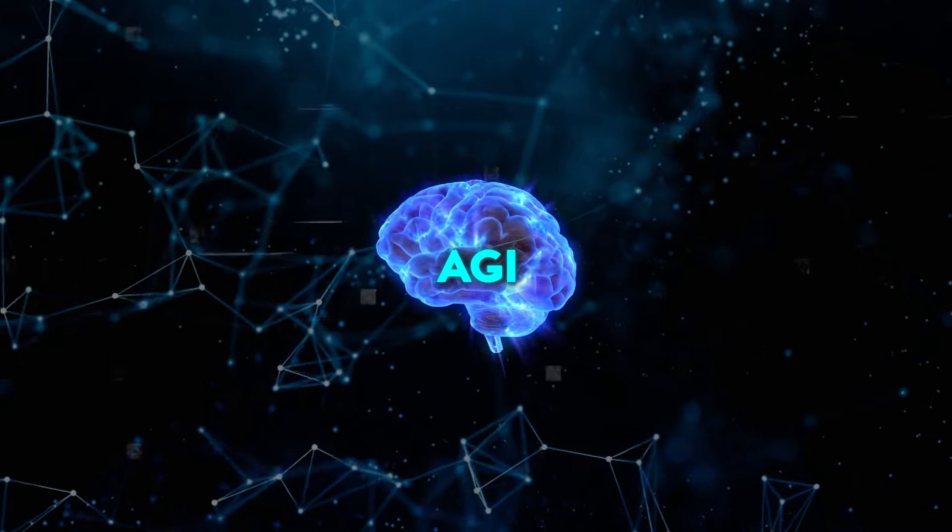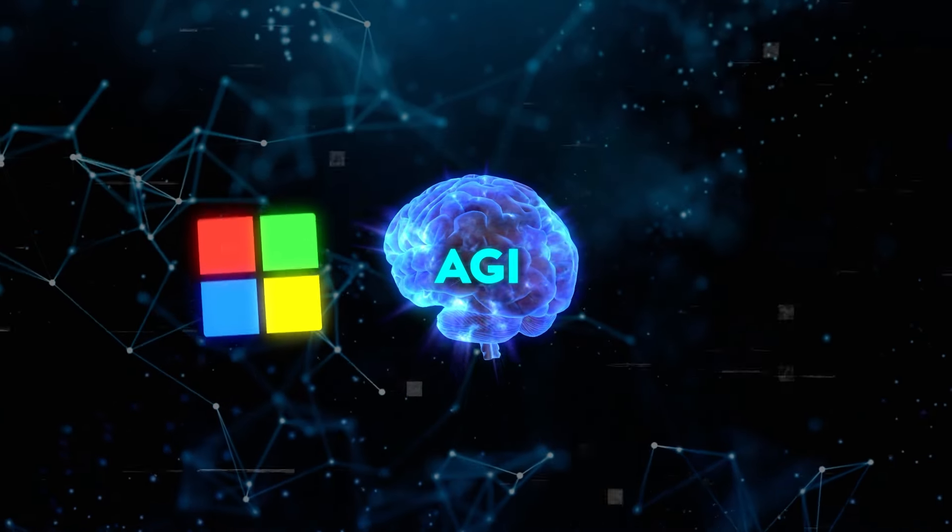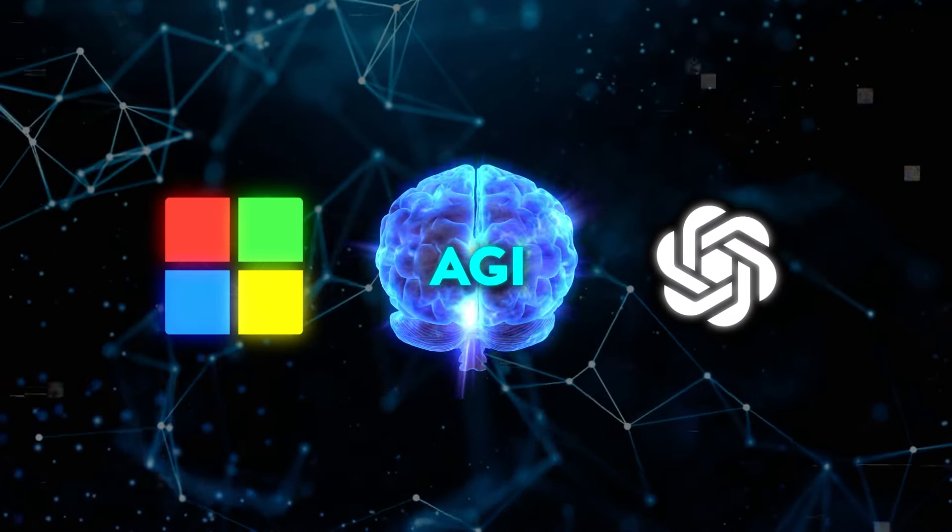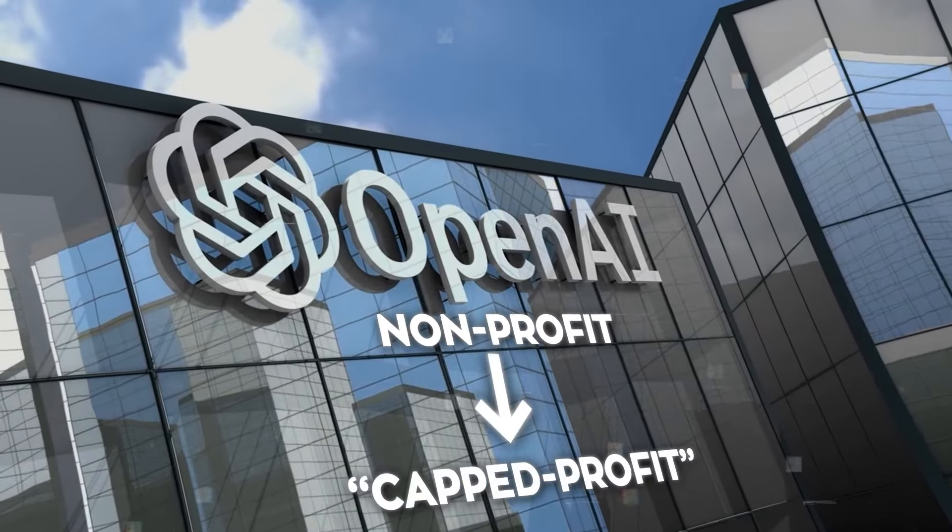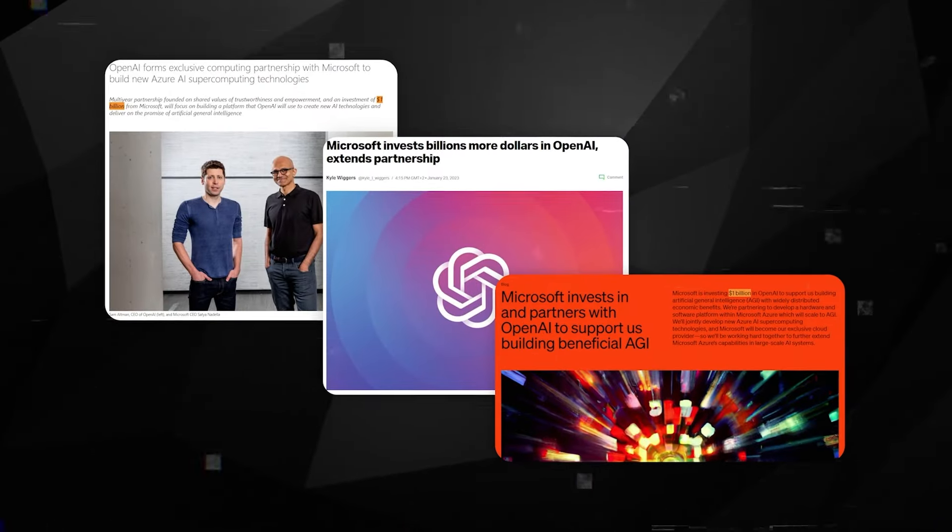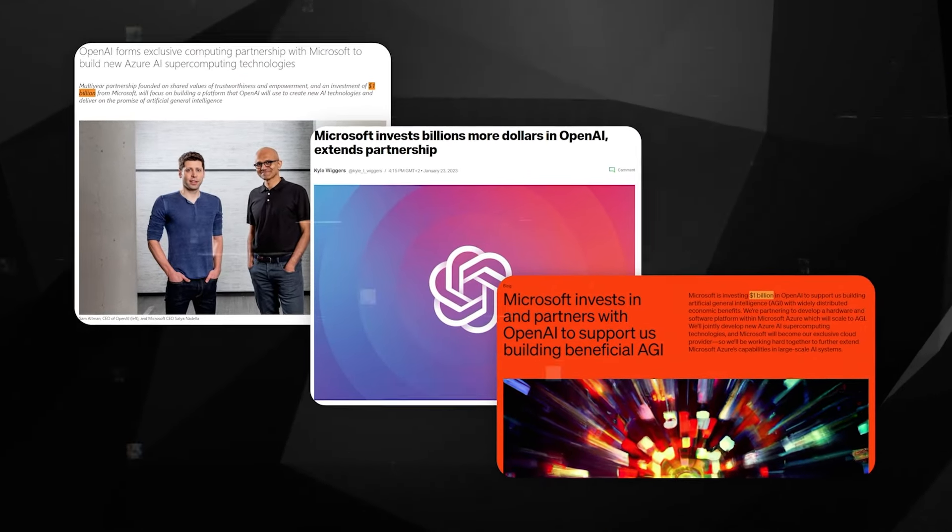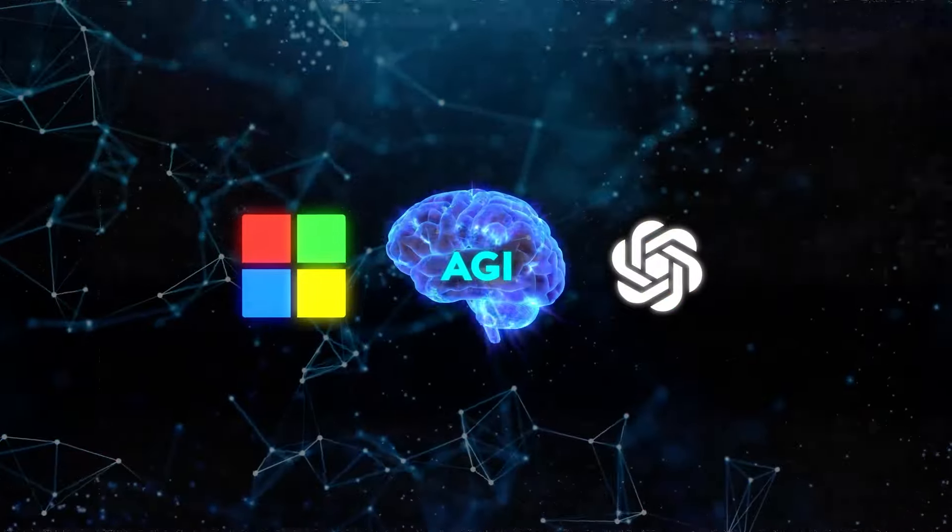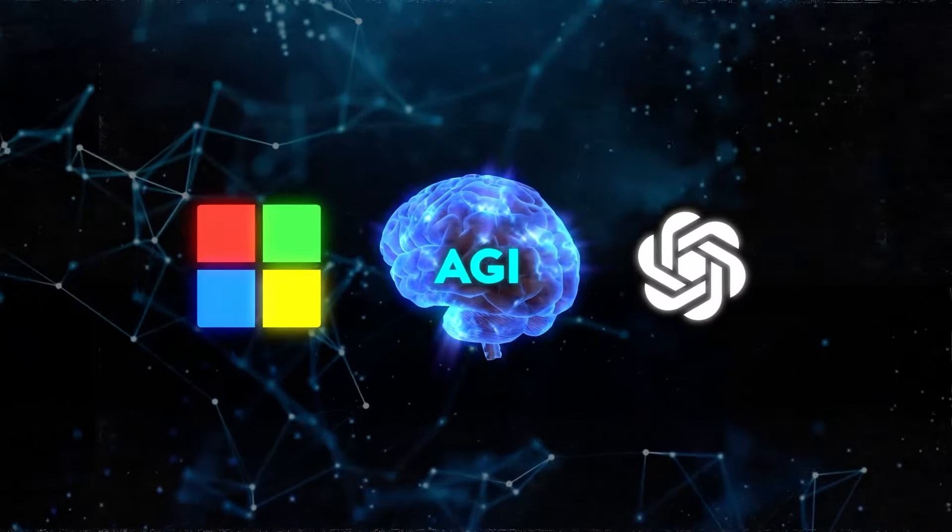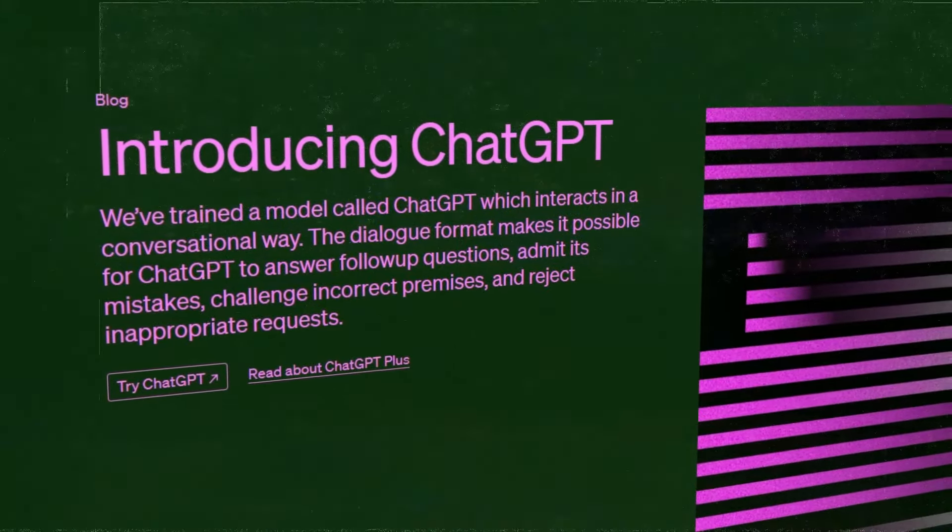So here's where things get even more interesting. Microsoft's involvement with OpenAI isn't just a footnote in this story. It's a central chapter. When OpenAI transitioned from its non-profit roots into a capped profit entity, Microsoft was right there, backing them with a whopping $1 billion investment. This partnership has since evolved into a multi-year, multi-billion dollar alliance, especially following the launch of ChatGPT.